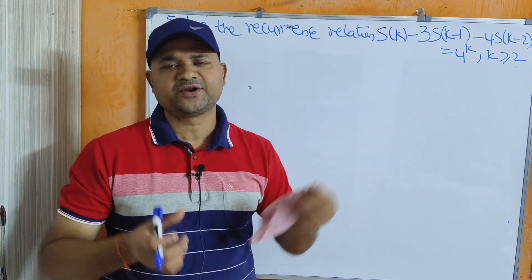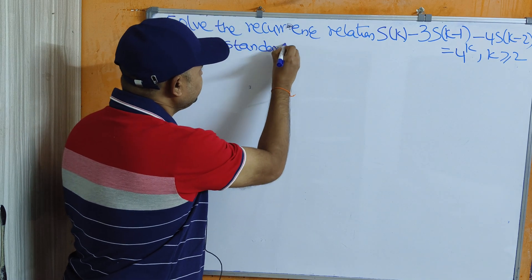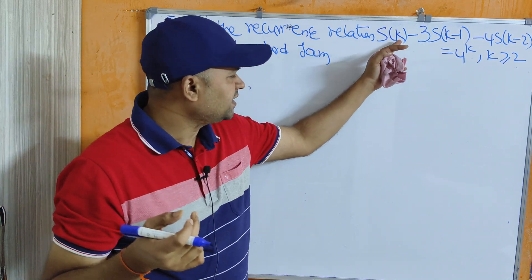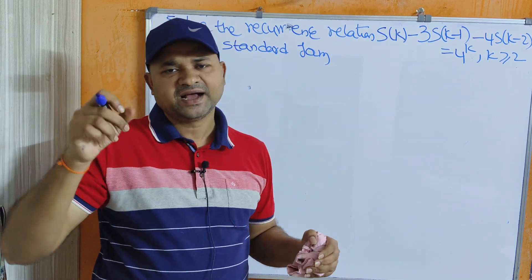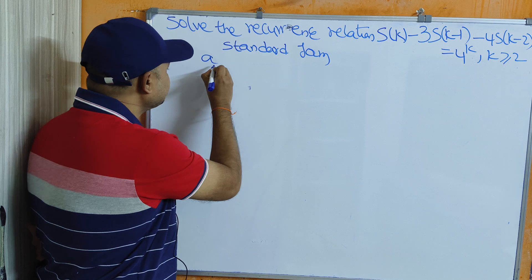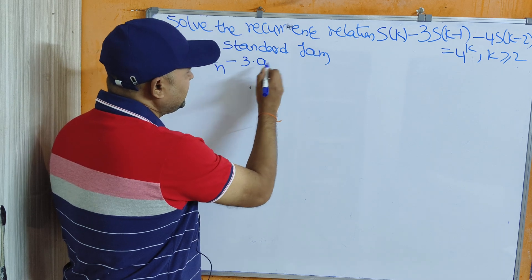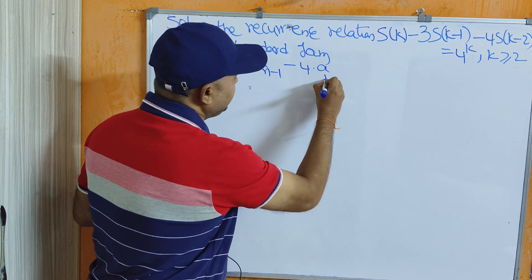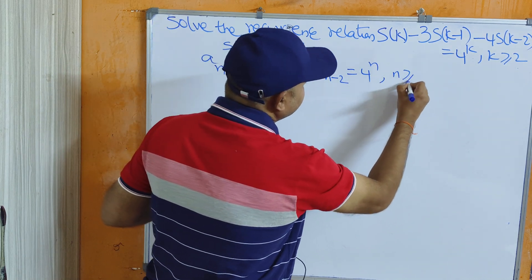This recurrence relation is not in standard form. So first we have to convert the given recurrence relation into standard form. In place of S use 'a' and in place of k write n in the subscript. So the relation becomes: a_n - 3·a_(n-1) - 4·a_(n-2) = 4^n, where n is greater than or equal to 2.